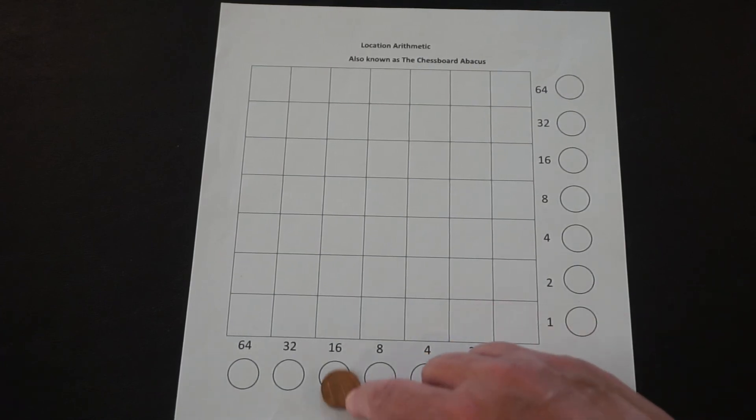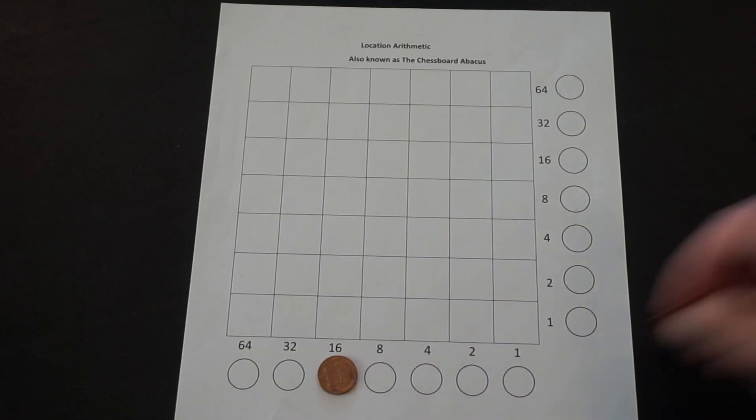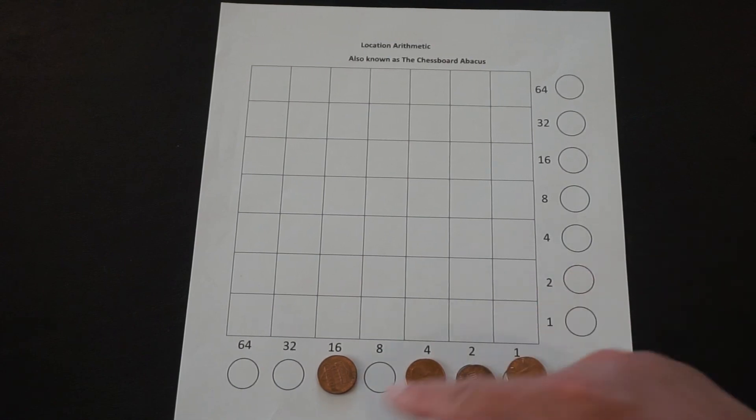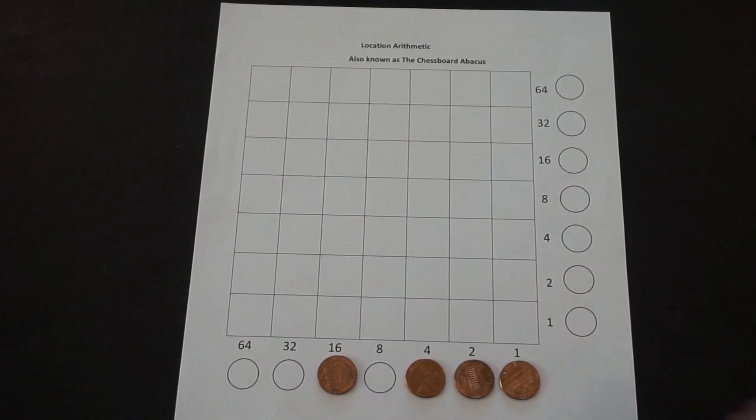Let's do 23. So that's going to be 16 plus 4 plus 2 plus 1. That gives us 23. And so that's really what you need to know to get started doing arithmetic on the chessboard abacus.